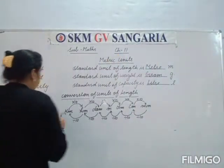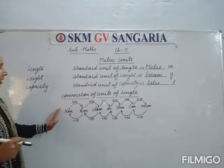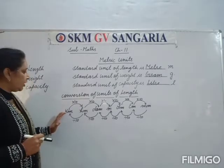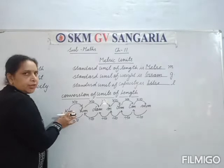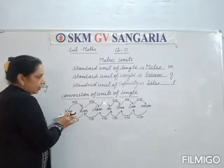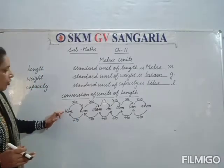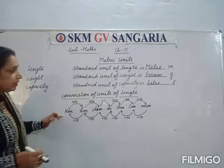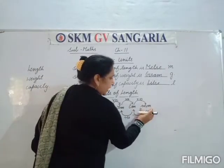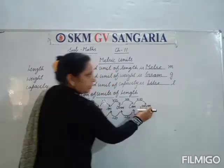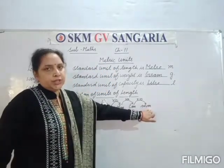For example, 1 kilometer is a higher unit. Kilometer is the higher unit and millimeter is the lower unit. So if you want to convert higher unit into lower unit, you multiply by 10.